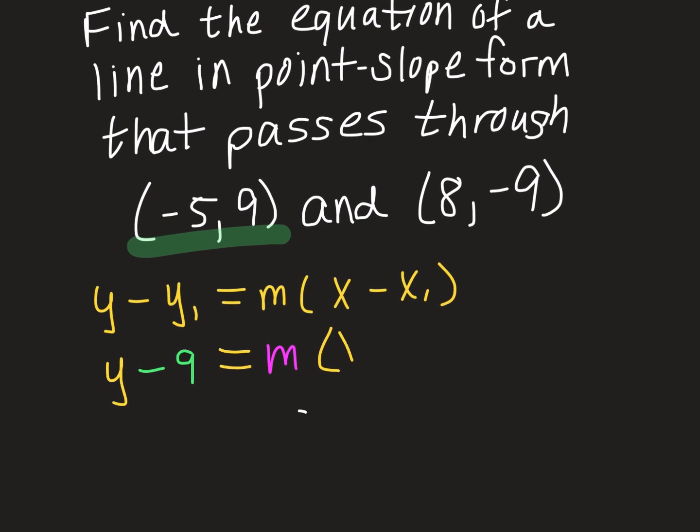And then because this is x minus negative 5, remember what happens when we have two, when we subtract a negative. So I'm going to go ahead and change this into a plus now. So then we've still got to get that slope.